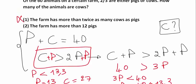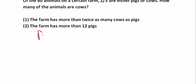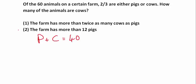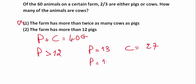So let me examine the second statement. So here we have P plus C is equal to 40. I don't forget this. The farm has more than 12 pigs. So P is greater than 12. So P could be equal to 13. In this case, C is equal to 27. And P could be equal to 14, and then in this case, C is equal to 26.